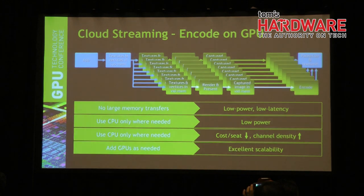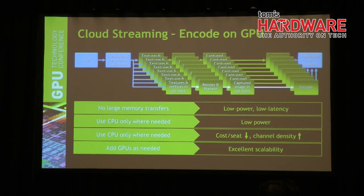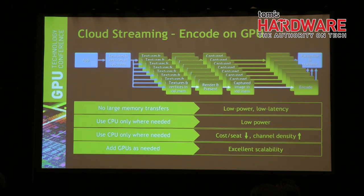The final benefit is scalability — you can just add multiple GPUs. Product announcements have shown you can add up to 12 or 16 GPUs in certain cases, where you have a couple of high-performance CPUs for serial tasks, and for video encoding or similar tasks you just add a bunch of GPUs. Overall system cost is much lower in such situations.